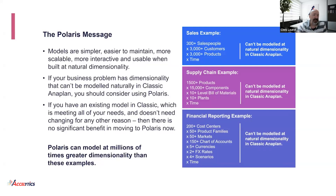There's a trade-off. But when there are highly sparse data sets, you can quickly see that Polaris is going to gain you back a lot of space and make for a much more efficient deployment. Workspace size for a Polaris model is driven by the number of populated cells only — including primary, aggregate, and calculated cells — and not the dimensionality. That's the key differentiator.